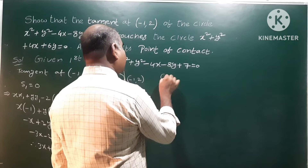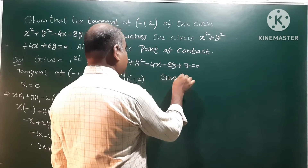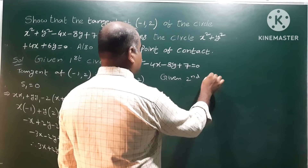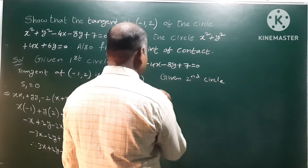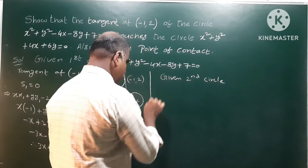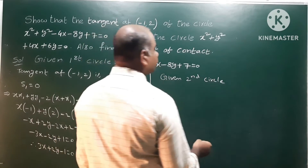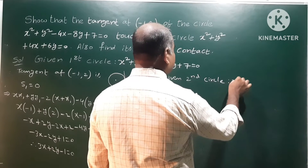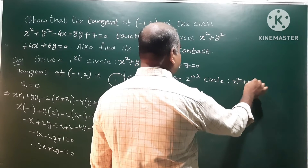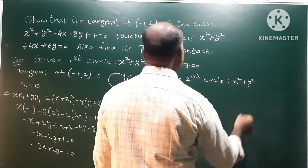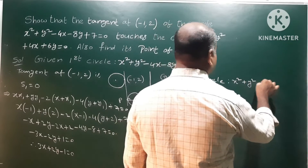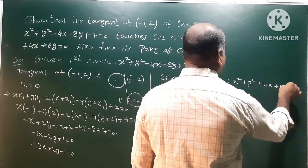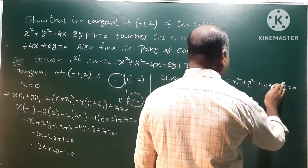The given second circle is x² + y² + 4x + 6y = 0. We need to show that the tangent line 3x + 2y - 1 = 0 touches this second circle as well.